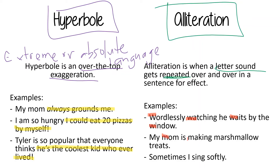Let's look at another one with a different letter: 'My mom is making marshmallow treats.' That M-m-m sound makes me think of yummy things — repeating that M sound makes the whole thing sound extra yummy. And then down here: 'Sometimes I sing softly.' Do you hear that S sound being repeated? That's what alliteration is — when you repeat the same sound multiple times in a sentence. It just makes it sound interesting, makes it sound important.